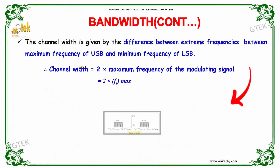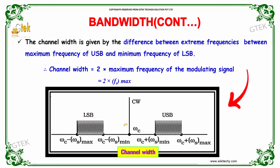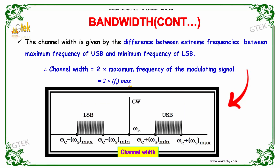The channel width is given by the difference between the extreme frequencies — between the maximum frequency of the upper sideband and the maximum frequency of the lower sideband. So, channel width is equal to 2 times the maximum frequency of the modulating signal, which is 2 × f_max.